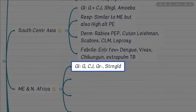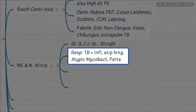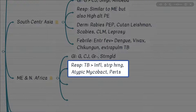Common GI infections in Middle East and North Africa are similar to other Asian countries — Campylobacter, other gram-negative rods, and Strongyloides. For respiratory infections, the pattern of South Central Asian countries such as India and Pakistan is similar to Middle East and North Africa: TB followed by influenza, strep pharyngitis, atypical mycobacteria, and pertussis.